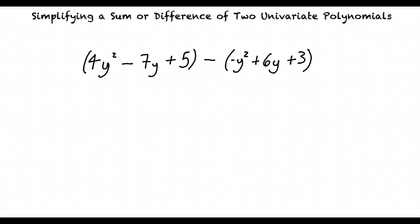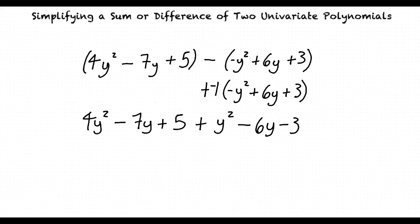So in this example, we would multiply the negative 1 outside the second polynomial by each term of that polynomial to result in the polynomial y squared minus 6y minus 3, which is then added to 4y squared minus 7y plus 5. That's right.